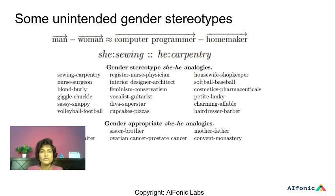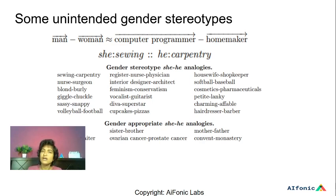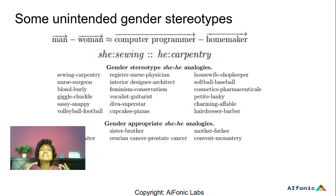To put this in context, here are some gender-appropriate analogies: she to he as mother to father, or she to he as sister to brother. These are gender-appropriate because sister, brother, mother, and father are gender-specific words. The idea is we do want to preserve these gender-appropriate analogies, but we don't want the gender-stereotyped analogies, where a shopkeeper, for instance, should not be related to a male — it could be a female as well.